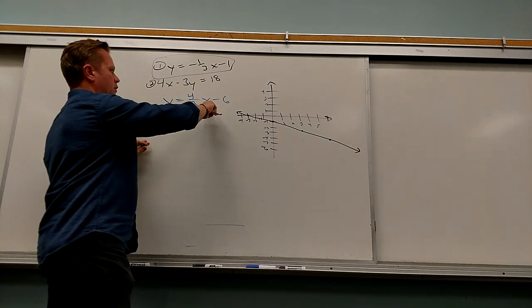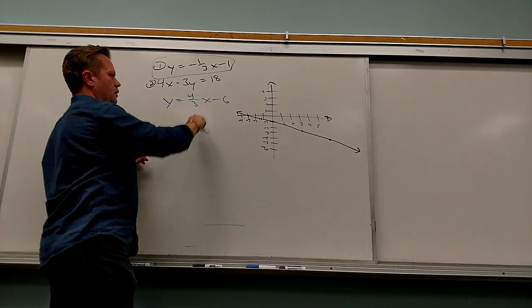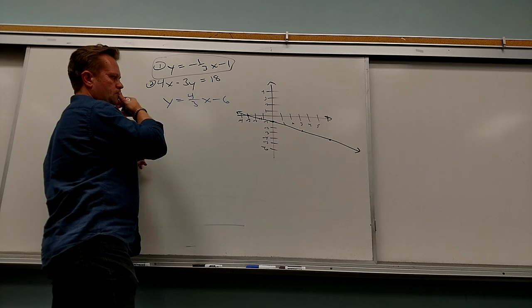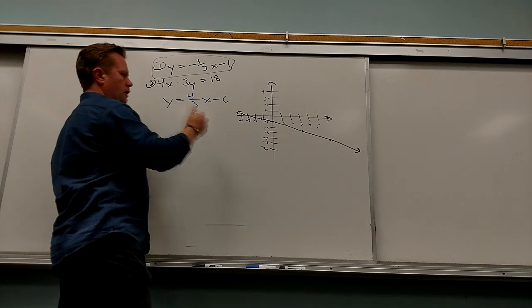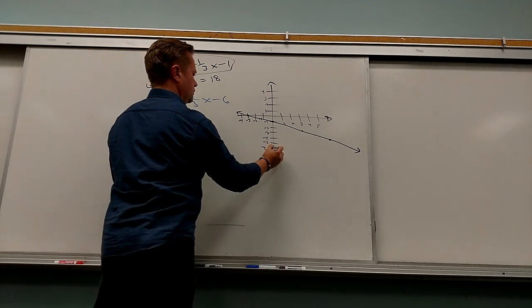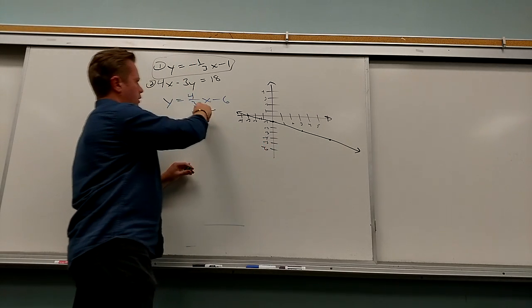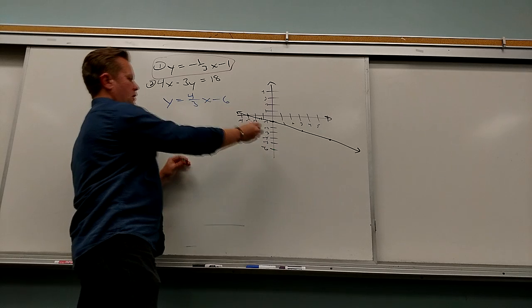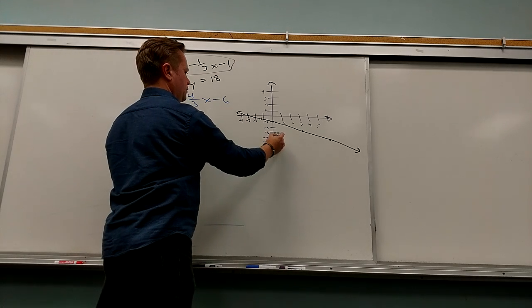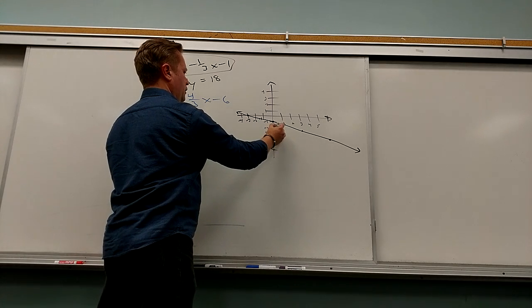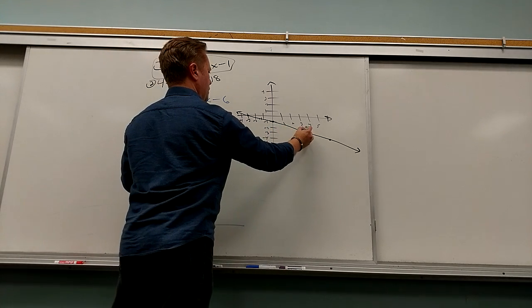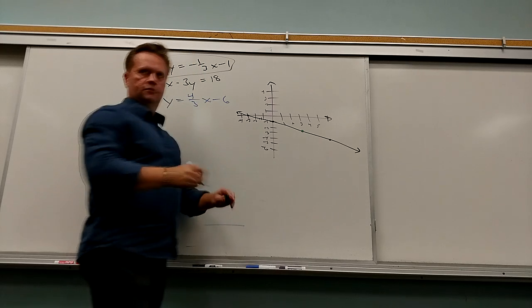So if you do this other line, where does it start? Negative six — zero, negative six. And it goes up four, over three. Up four — one, two, three, four — over three. So bam. Yeah, cool.